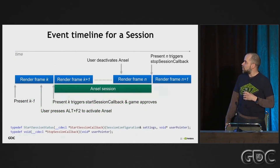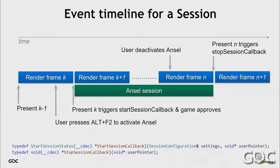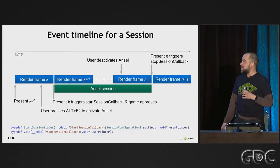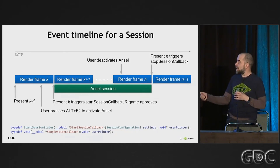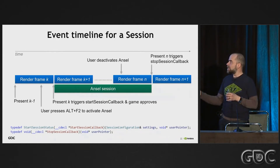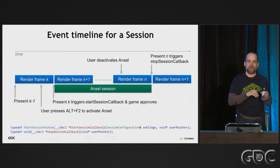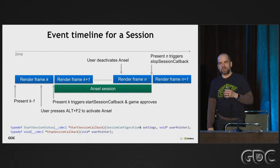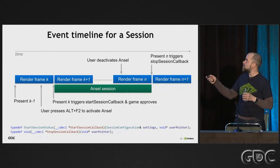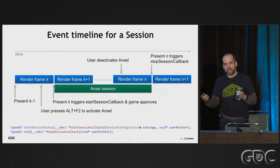This is a graph of what's going on. At the bottom I've listed the function declarations for the callbacks for reference. We're rendering and presenting some frames, and then while we're preparing render frame K, the user presses Alt+F2. The next time we hit present, Ansel will trigger that callback. Then it's your job to say yes or no. If you say yes, the Ansel session will start - pause, turn off your UI, turn off your mouse cursor, all that stuff. Then the user interacts with Ansel, moves the camera around, saves as many screenshots as he wants. And then when he's done and closes the session, Ansel says on that next present, stop session - and that's when you unpause and go back to all your normal rendering. It's pretty straightforward.